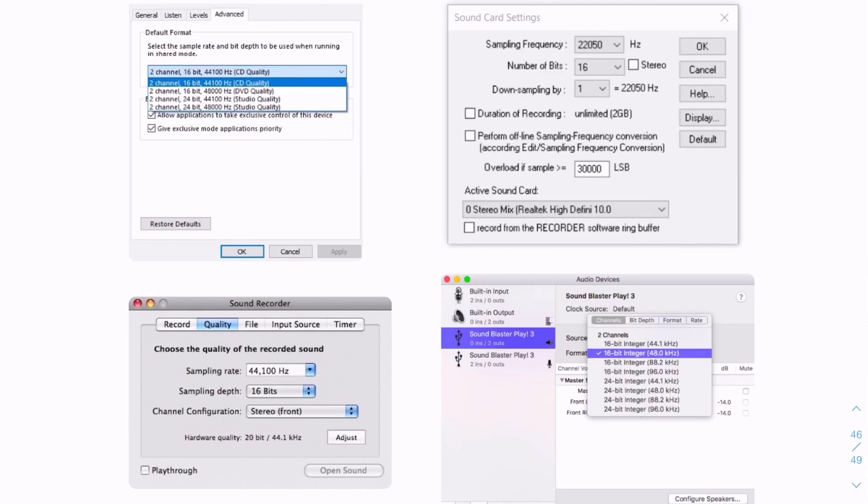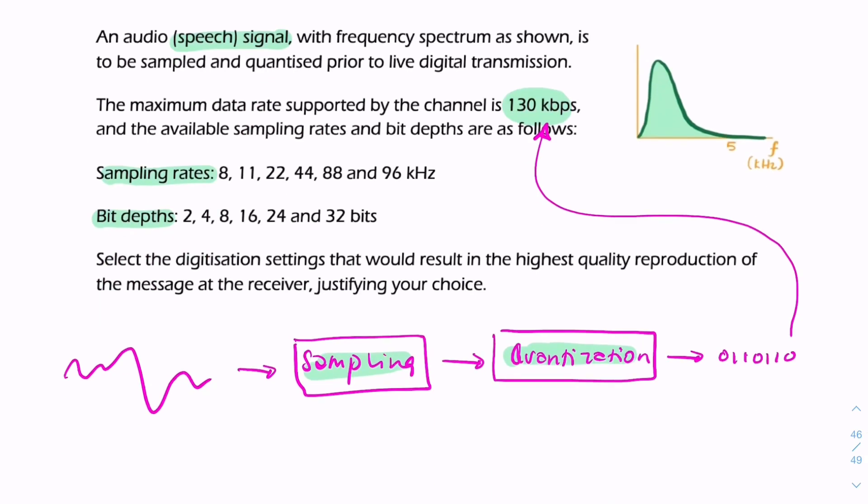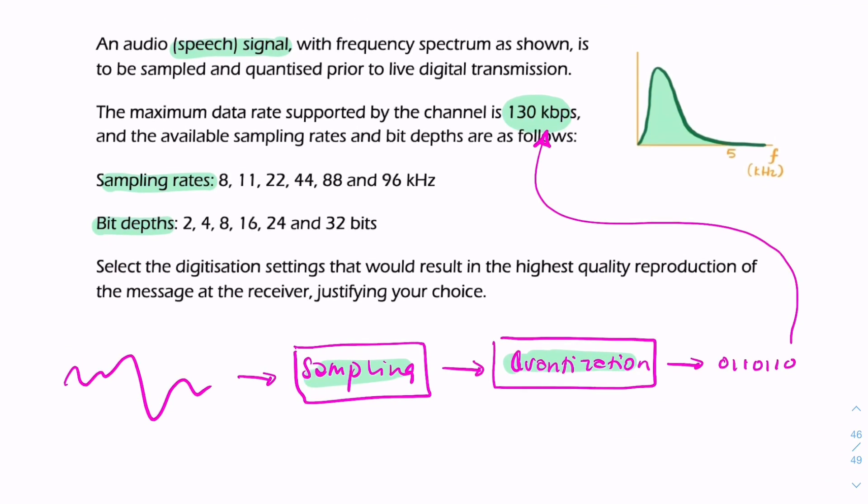Even if you're setting up your sound card, here we've got a Sound Blaster, here we've got a sound recorder on a Mac. Very often you need to set the sample rate and the bit depth - there's the sample rate, there's the bit depth. Here we're setting up a microphone sound recorder or a sound card, so it's something fairly common.